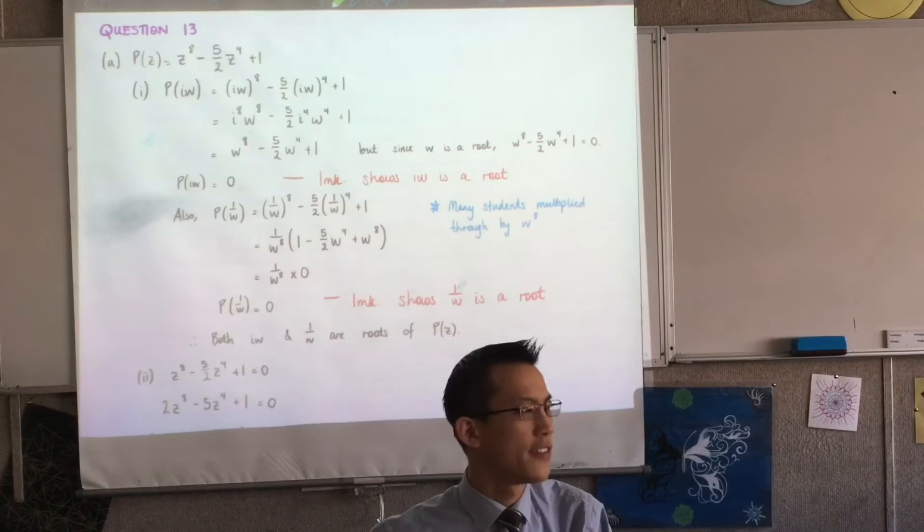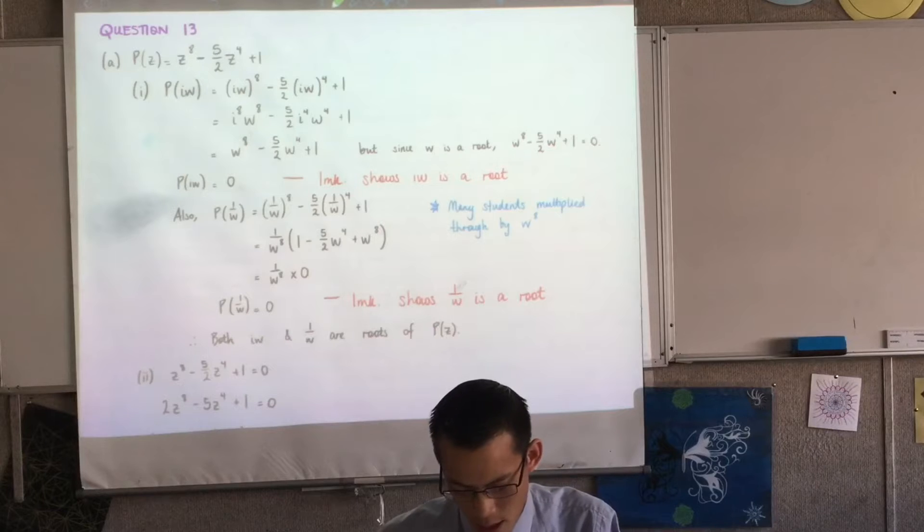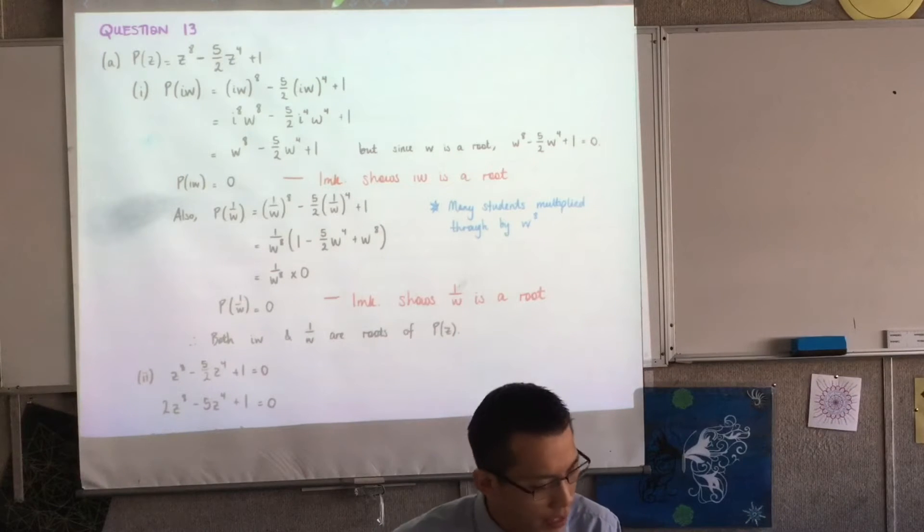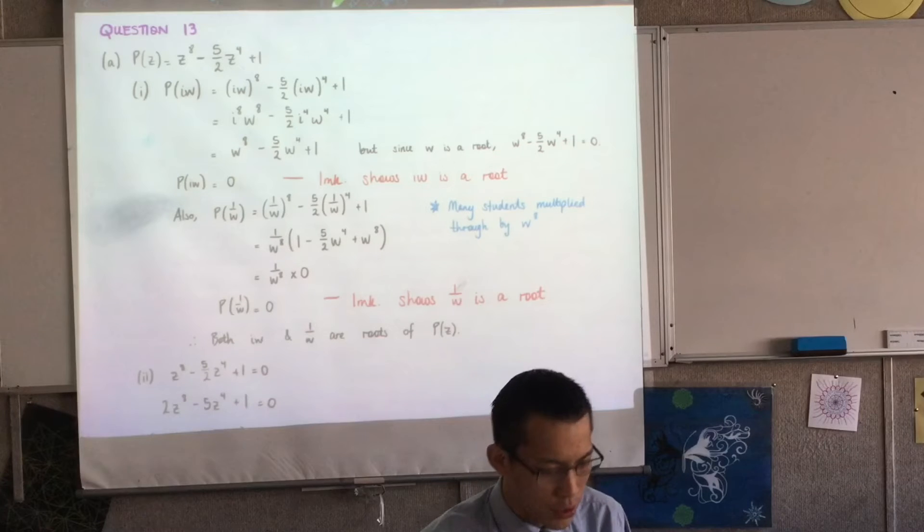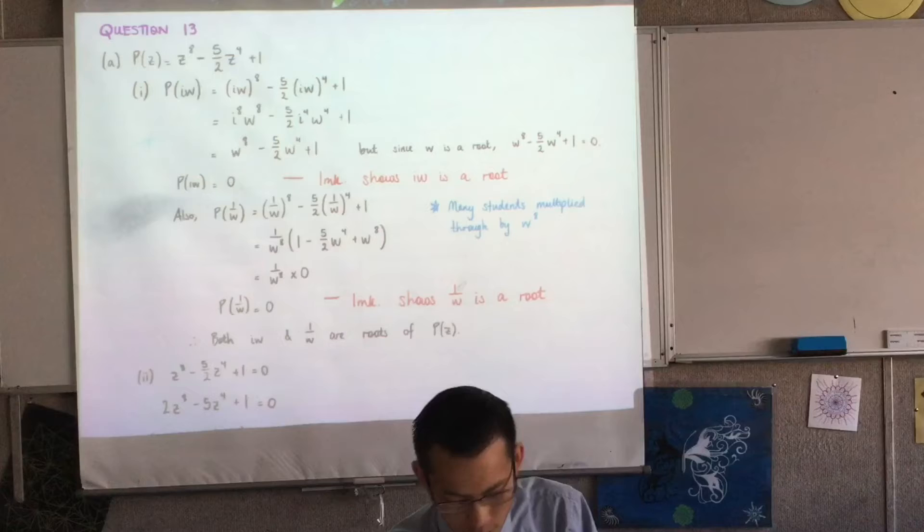I mentioned that polynomials was one of our weak points, okay? So we've got some stuff to review over the next few weeks. Let's have a look at this question. Show that, given this P of Z polynomial, show that iw and 1 over w are also roots.